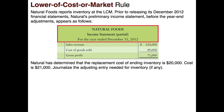Prior to releasing its December 2012 financial statements, Natural's preliminary income statement before the year-end adjustments appears as follows. We have our sales revenue, our cost of goods sold which is currently forty-nine thousand, and our gross profit. Natural has determined that the replacement cost — which is also the market value — of ending inventory is twenty thousand dollars, but they actually paid twenty-one thousand dollars for it.